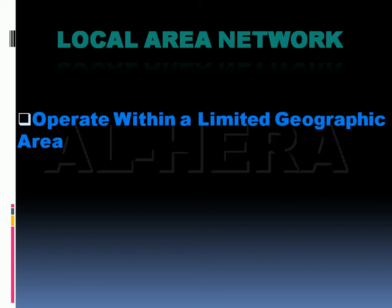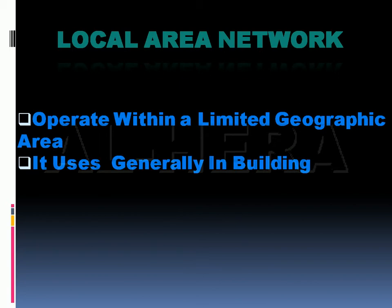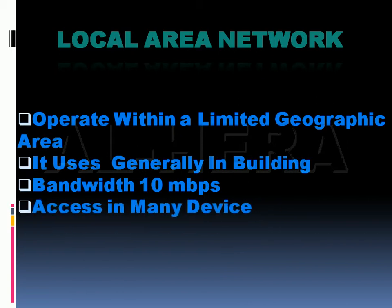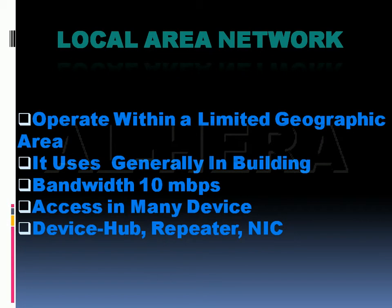A Local Area Network operates within a limited geographic area, generally within a building. It connects multiple computers locally. The bandwidth is typically 10 Mbps. Many devices can access the network — devices include hubs, repeaters, and network interface cards.